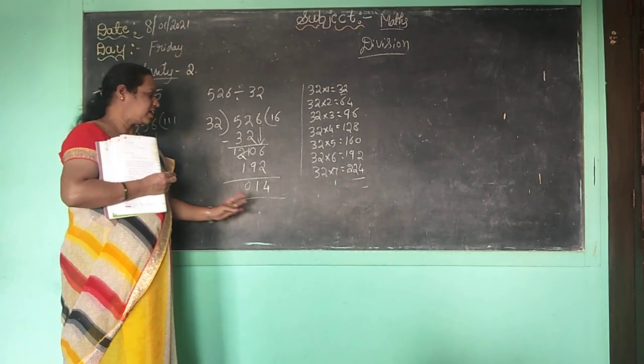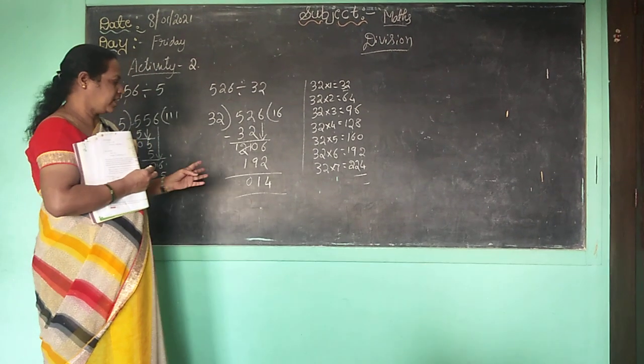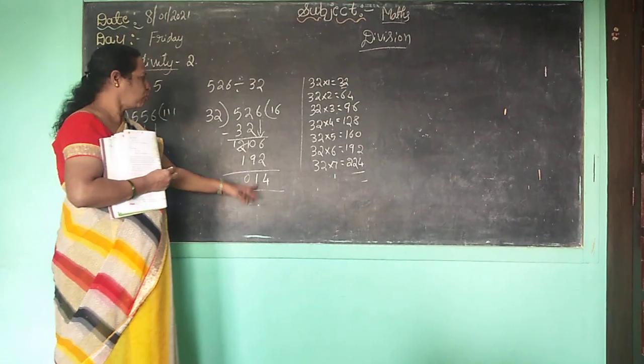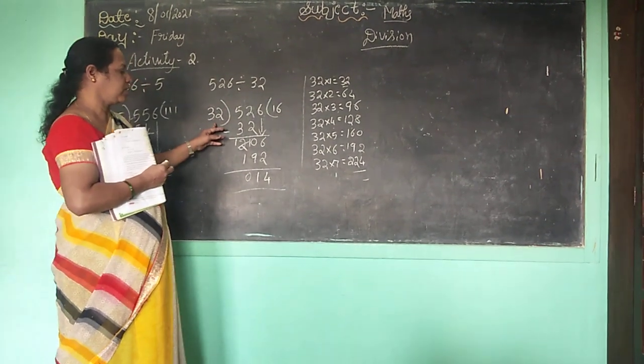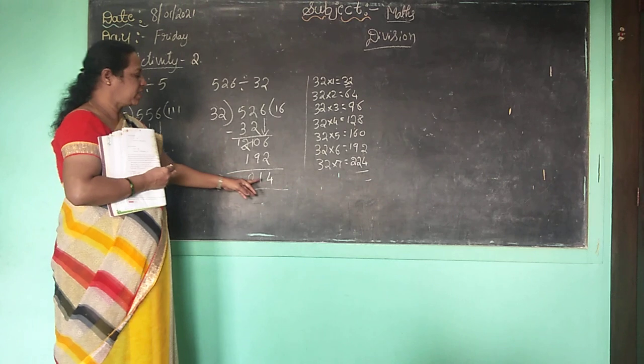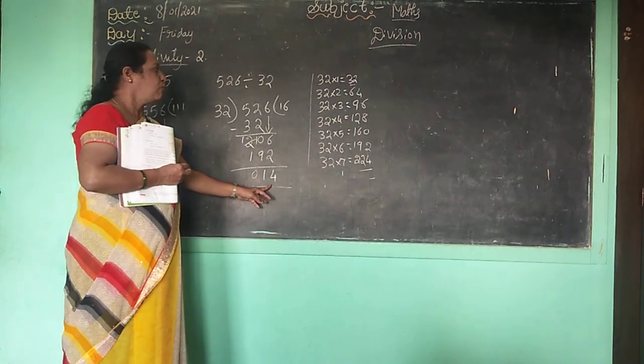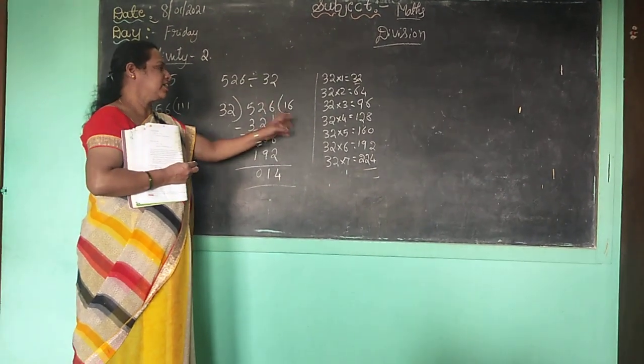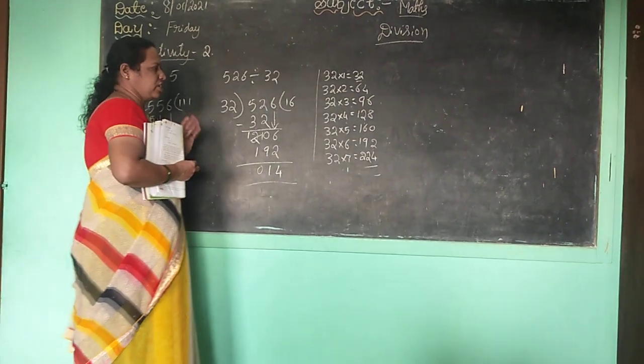Remainder is 14. 14 will not go into 32's table any further. Remainder is 14, quotient is 16.